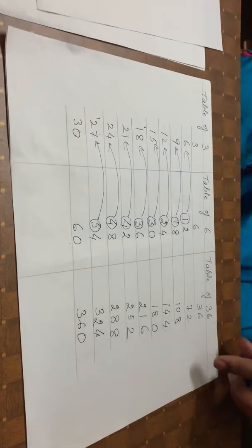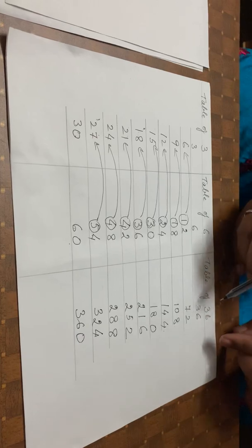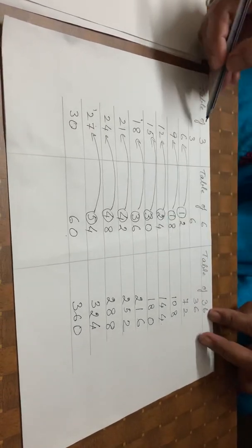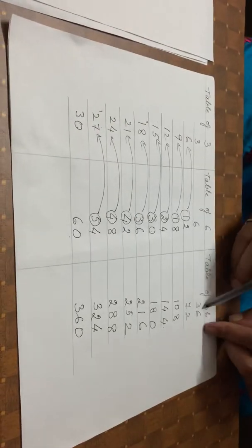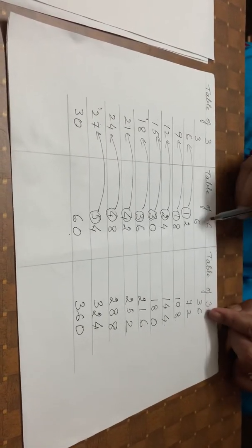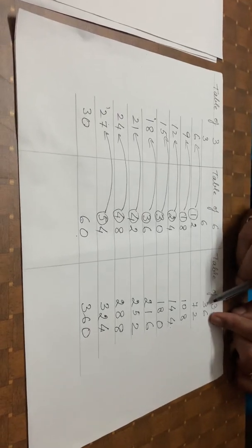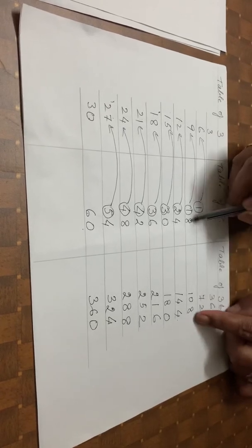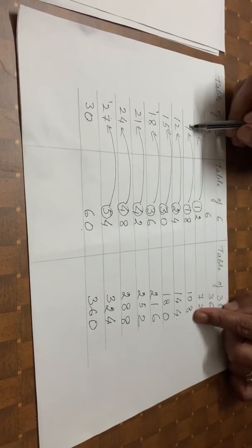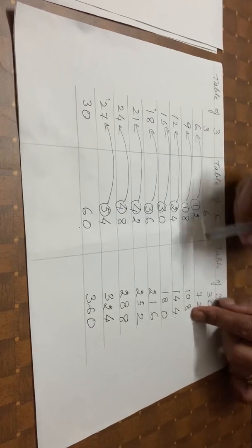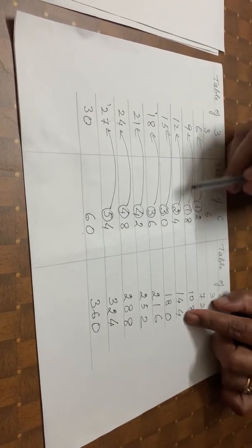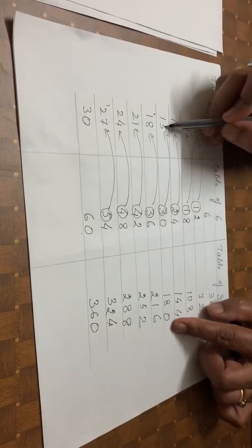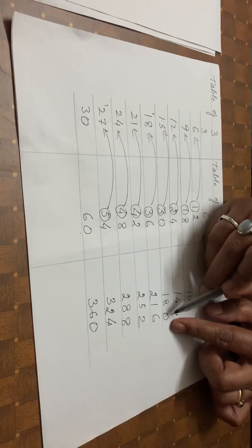Now let us take one more number, for example 36. So here first we will write the table of 3 and then 6, then the table of 6, and here we will write the table of 36. 6 as it is and in front of that 3, so 36. Then 2, and 1 will be added to 6, that is 72. Then 8, and 1 added to 9 is 10, so 108. Then 4, and 2 plus 2 is 4 again and 1, giving 144. Then 0, and 3 plus 5 is 8 and 1, so 180.